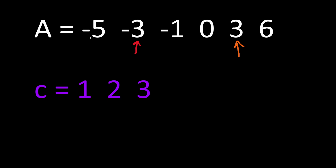It seems that in this problem, this symmetry around zero — the negative numbers and the positive numbers — is very important to solve this problem using the caterpillar method. Since we found the absolute value of minus 3 equal to 3, we shift our attention to the element coming right after minus 3.